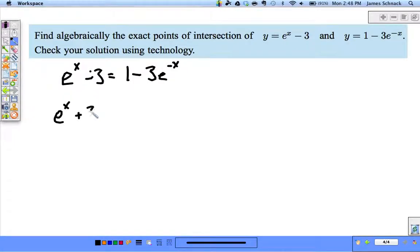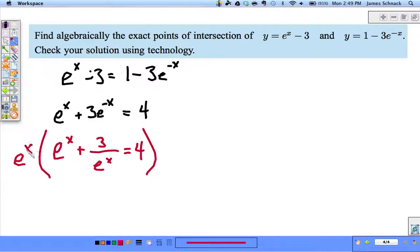So e^x + 3e^(-x) = 4. How does that help us? Well, e^x + 3/e^x = 4. This should look familiar from quadratic units. Let's multiply everything by e^x.